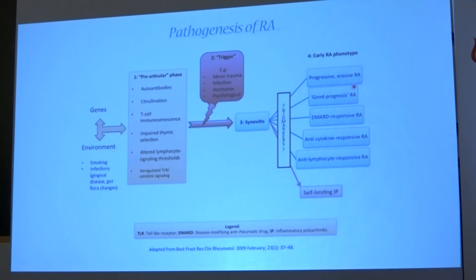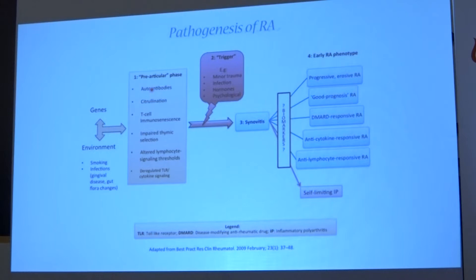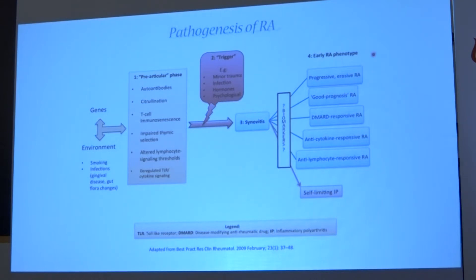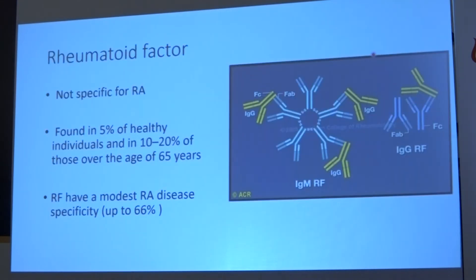What causes rheumatoid? We don't know for sure, but studies show there are some genetic backgrounds — sometimes you can see familial clustering. There is some linkage to HLA complex. We also have environmental triggers like smoking, which has been linked to rheumatoid arthritis, mainly through citrullination and production of anti-citrullinated peptide antibodies. Infectious agents and other environmental factors in the setting of autoimmunity all contribute to the production of rheumatoid inflammation.